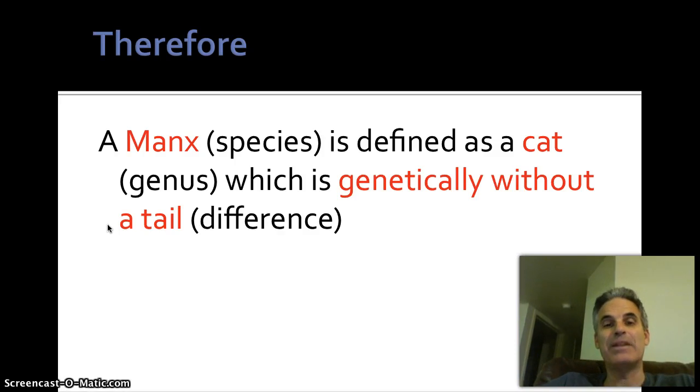But if it's a type that is normally genetically without a tail, that's what a Manx cat is. So again, genus and difference. A Manx is a cat genus that is genetically without a tail difference. And that is genus and difference.